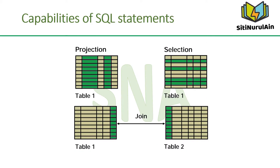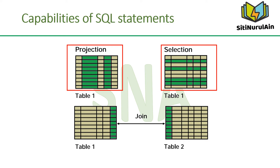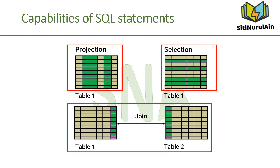A SELECT statement retrieves information from the database. With a SELECT statement, you can use the following capabilities: Projection — select the columns in a table that are returned by a query, selecting as few or as many columns as required. Selection — select the rows in a table that are returned by a query; various criteria can be used to restrict the rows retrieved. Joining — bring together data stored in different tables by specifying the link between them.